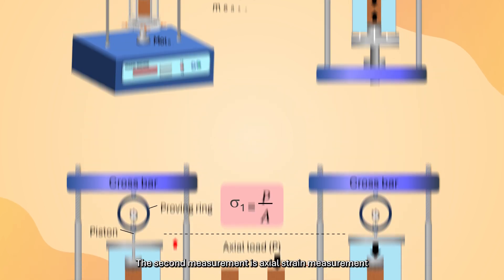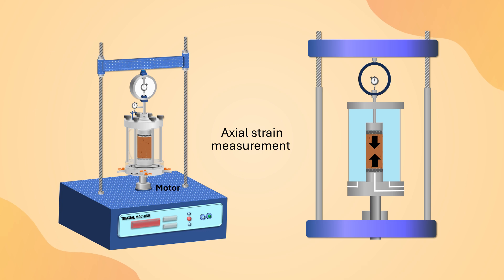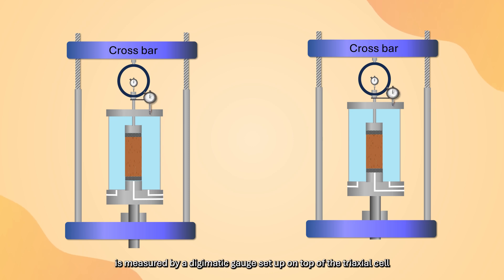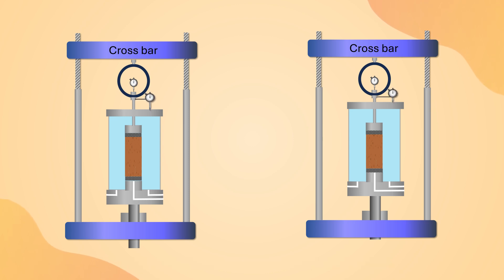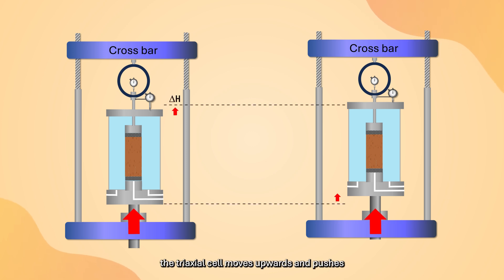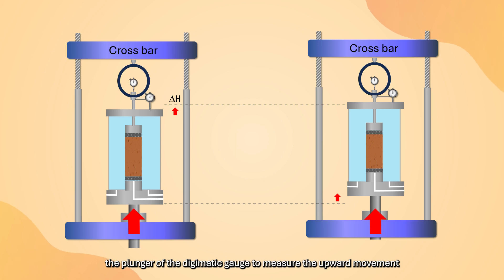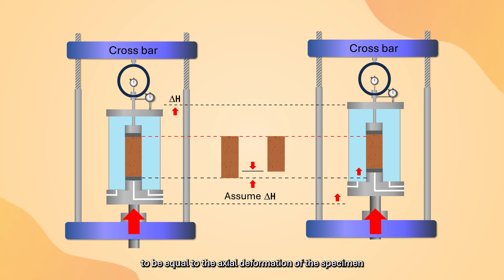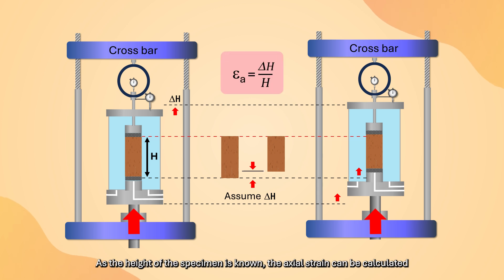The second measurement is axial strain measurement. The axial deformation of the soil specimen during shearing is measured by a digimatic gauge set up on top of the triaxial cell and fixed to the piston. When an axial force is applied through the motor, the triaxial cell moves upwards and pushes the plunger of the digimatic gauge to measure the upward movement. The magnitude of this upward movement is assumed equal to the axial deformation of the specimen, and as the height of the specimen is known, the axial strain can be calculated.